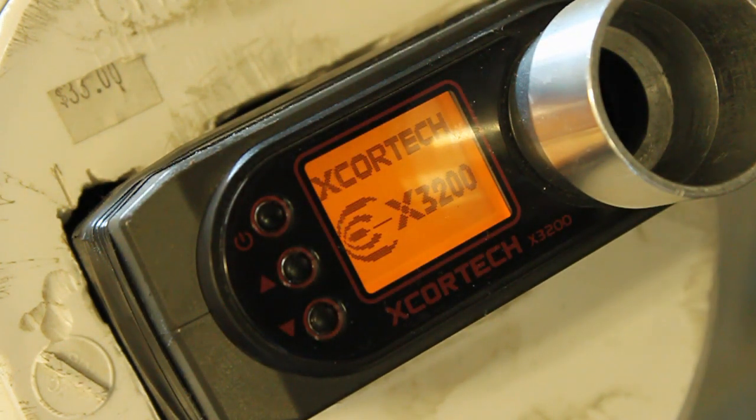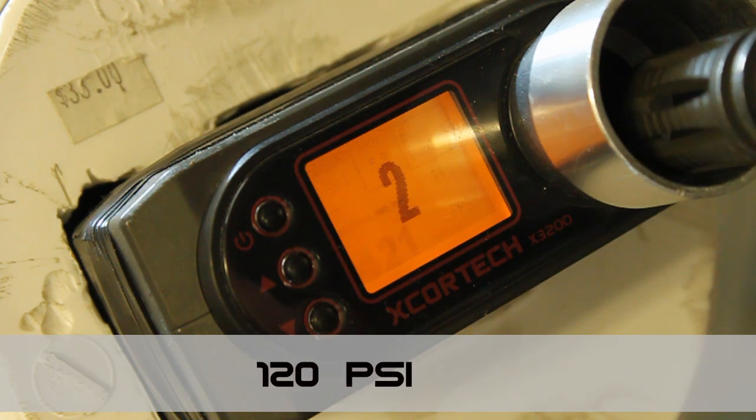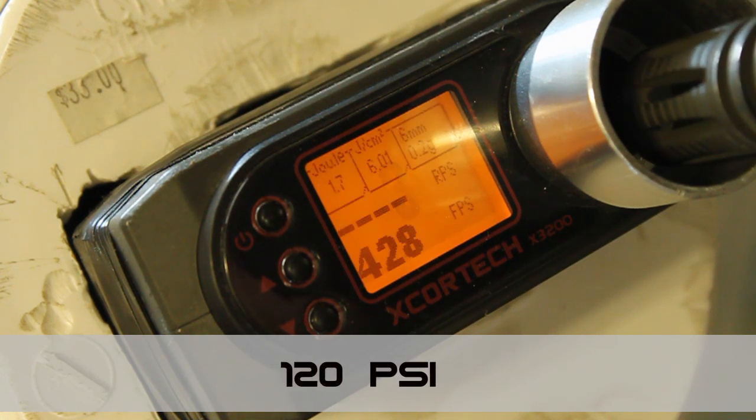All of the chronograph sequences were done with .2g BBs at varying PSIs. The first test was done at 120 PSI. Note that this setup also has an Orga 6.23 wide bore barrel installed.